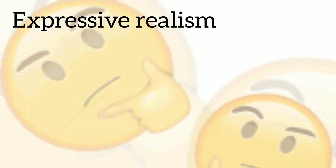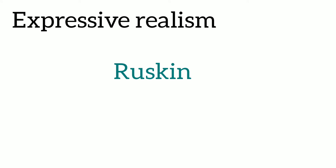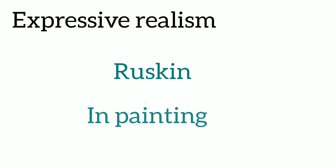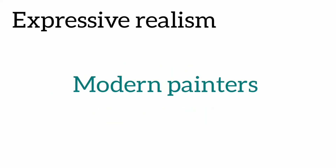Friends, discover करते हैं कि expressive realism की term किसने introduce करवाई थी। So, Ruskin was the first critic who introduced expressive realism in painting। उन्होंने ये term अपनी painting में introduce करवाई। In his book Modern Painters, Ruskin says that there is no difference between painting and poetry — painting में भी artist reality को express करता है, और poetry में भी writer reality को express करता है। The difference is only of material things, बाकी दोनों reality को ही express कर रहे हैं।